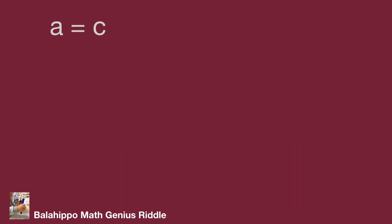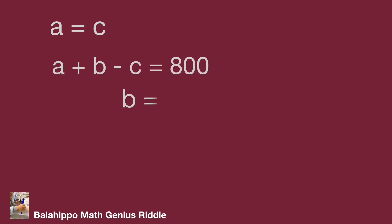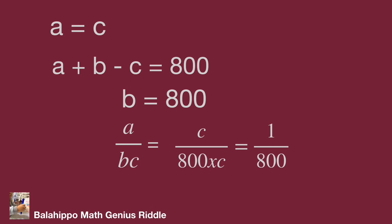While a equals c, substituting into a plus b minus c equal to 800 gives b equal to 800. Substituting a by c and b by 800 into a over bc, the value is also 1 over 800. So that is our answer. Do you find the same result? Hope you enjoyed the video. Thank you.